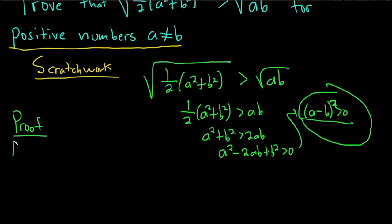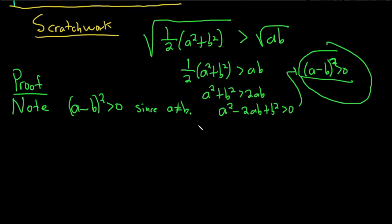So note, A minus B squared is greater than 0, and this is since A is not equal to B. Okay, so we know that's true.